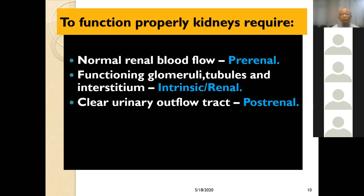To function properly, the kidney requires normal blood flow. If there is any impairment in normal blood flow, there may be pre-renal AKI. If there is abnormality in functional glomeruli, tubules, or interstitium, that is intrinsic or renal pathology causing AKI. If there is any outflow tract obstruction, those are the post-renal causes of AKI.